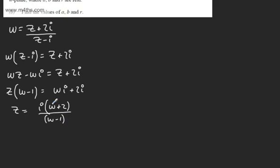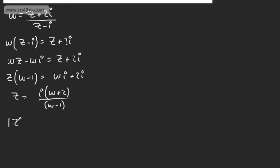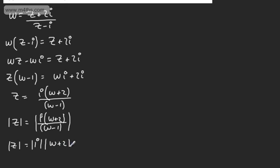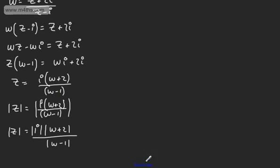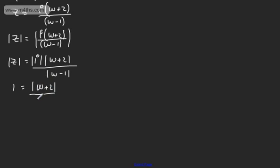At this stage, I'm going to take the modulus of both sides. Taking the modulus of both sides, mod z equals the modulus of i(w plus 2) over (w minus 1). We can split the modulus up on the right-hand side: mod z equals mod i times mod(w plus 2) divided by mod(w minus 1). Since mod i equals 1, and inserting 1 for mod z on the left, we get mod(w minus 1) equals mod(w plus 2).